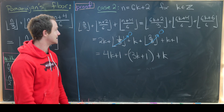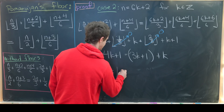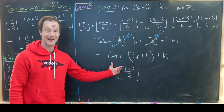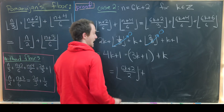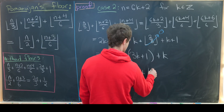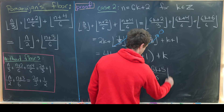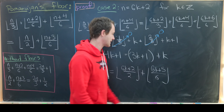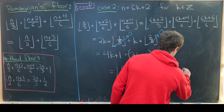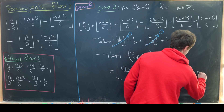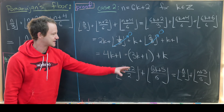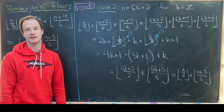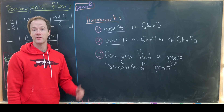We rewrite 4k + 1 as (3k + 1) + k. Notice 3k + 1 = floor((6k+2)/2), since the numerator is even and divides perfectly. And k = floor((6k+5)/6), since 5/6 is between 0 and 1. So we've arrived at the floor of n/2 plus the floor of (n+3)/6 — exactly the right-hand side — proving the identity when n = 6k + 2.